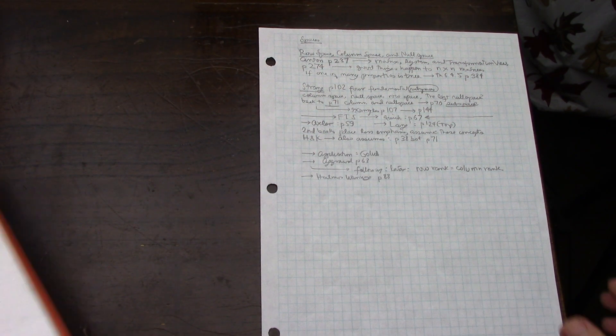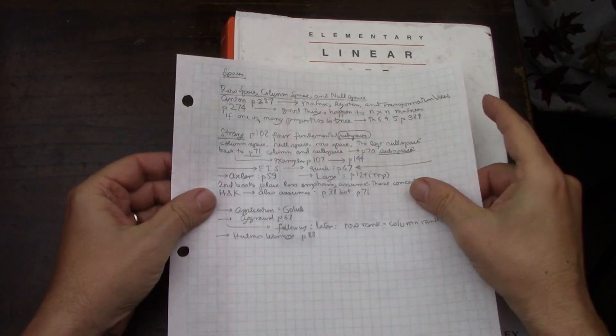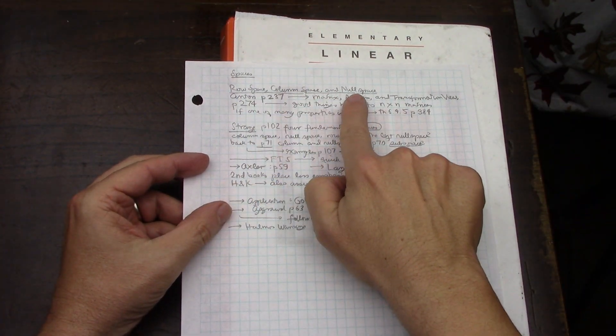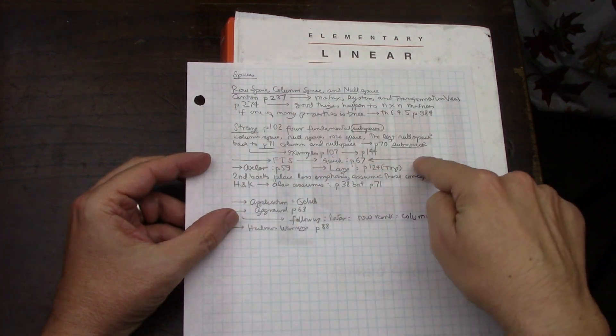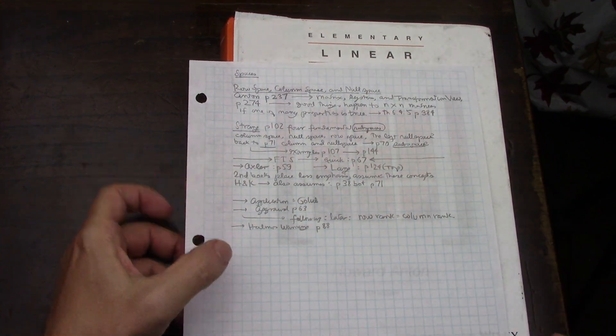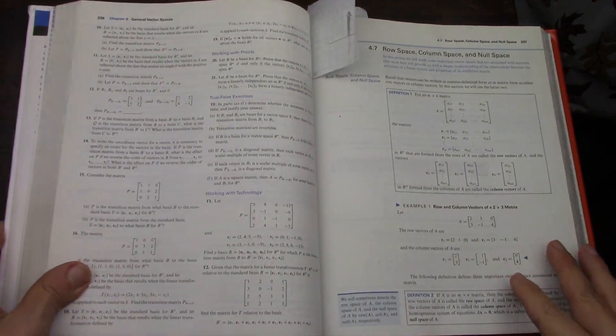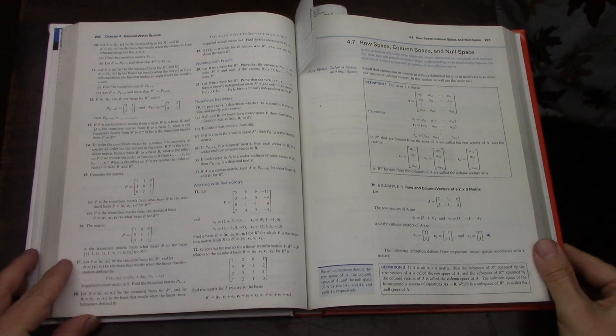I'm going to start this particular video, which is about the row space, column space, null space, and the left null space, which is discussed in Strang and Agrawal, but I don't think I found it in any of my other books. Of course, that means you can learn all the linear algebra you want without discussing it, but some people do.